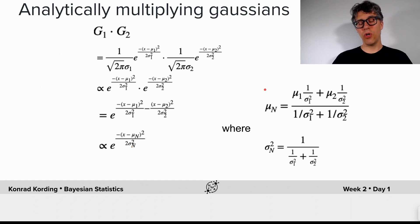And that new Gaussian has the property that the means of the two Gaussians are weighted inversely according to the relevant variances. This is what we have here. And we have a new variance that is the inverse of the sum of the inverse variances.